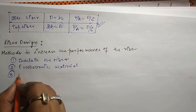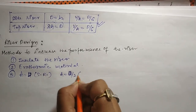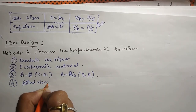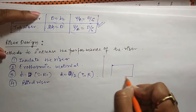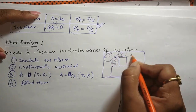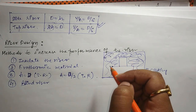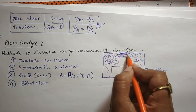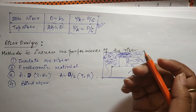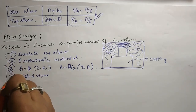Method two: use exothermic material around the riser. Exothermic materials generate heat, so the riser will solidify later. Method three: optimization — for the side riser H = D, and for the top riser H = D/2. Method four: use a blind riser. In a blind riser, the top of the riser is covered with moulding sand and is not open to the environment. This reduces heat transfer by conduction and radiation, so the riser takes longer to solidify, which is exactly what we want.